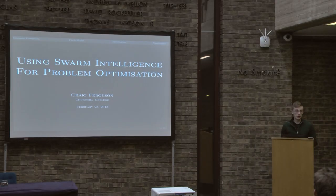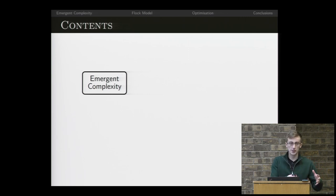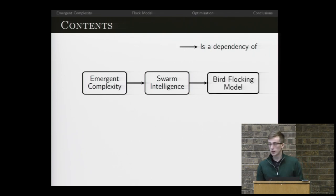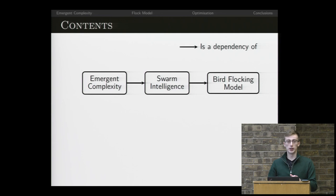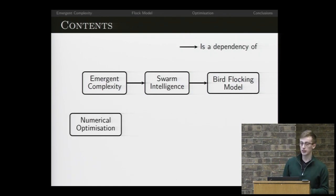Today I'm going to be talking about one application of swarm intelligence, which is a class of algorithms inspired by the ways that nature solves its problems. I'll start by introducing the concept of emergent complexity, explaining how it provides intuition behind swarm intelligence. We'll discuss some principles of swarm intelligence, then show how we can apply those principles to develop an accurate model of the way that birds flock in large groups. Then we'll consider how to apply this model to solve a real-world problem in computer science, particularly numerical optimization.